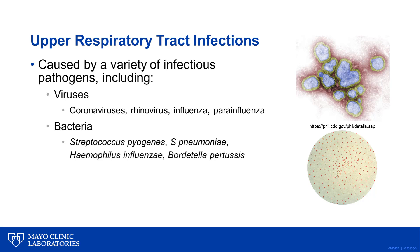We now have an appreciation that these infections can be caused by a variety of pathogens. Viruses account for the majority of upper respiratory infections and frequently involve coronaviruses and rhinoviruses, which are causes of the common cold. Influenza is an important cause of respiratory infections and demonstrates a pronounced seasonality, with the vast majority of cases occurring between the months of November and March each year in the United States. Bacteria can also cause upper respiratory tract infections, with Streptococcus pyogenes being the etiologic agent of strep throat and Bordetella pertussis causing pertussis or whooping cough. Other bacteria, such as Mycoplasma pneumoniae, can also be associated with upper respiratory illness.